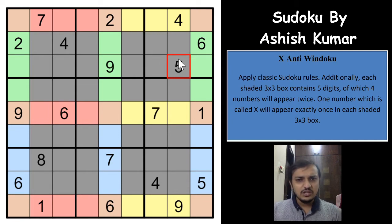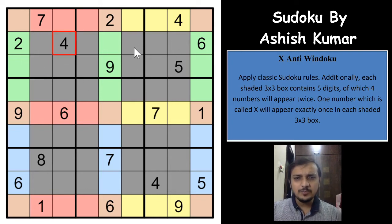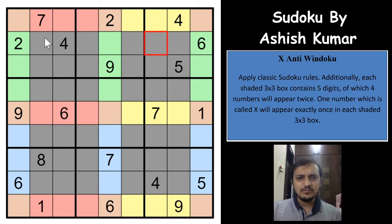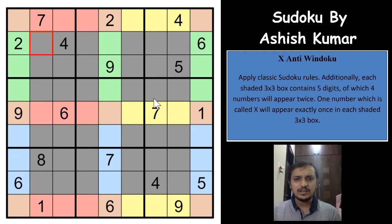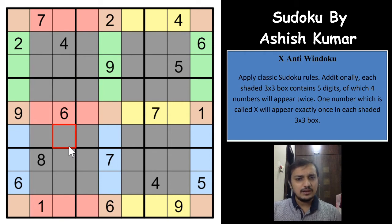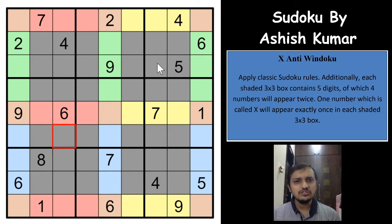One more thing: the 4 digits appearing twice in one Windoku will never be the same 4 digits appearing twice in an adjacent (non-diagonal) Windoku, because that would place 4 digits appearing in 3 rows, which is impossible by classic Sudoku rules. So those 4 repeated digits in one Windoku will never appear twice in an orthogonally adjacent Windoku, and the X number will not be among those 4 digits. These are the tricks that will help you solve an X-Anti Windoku.